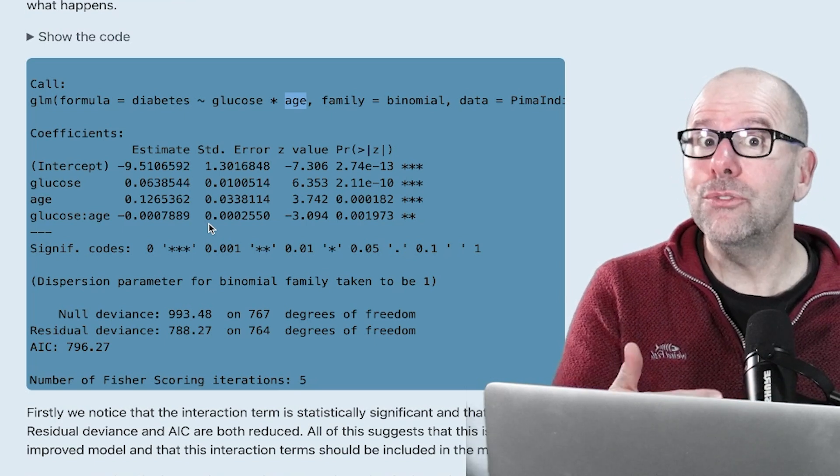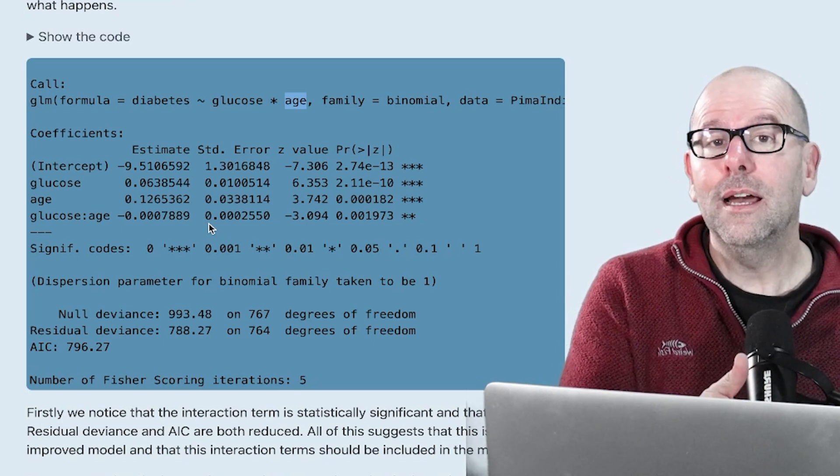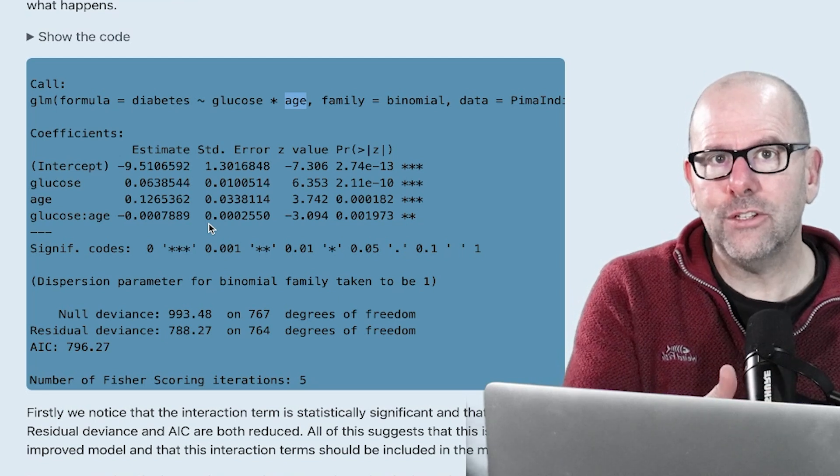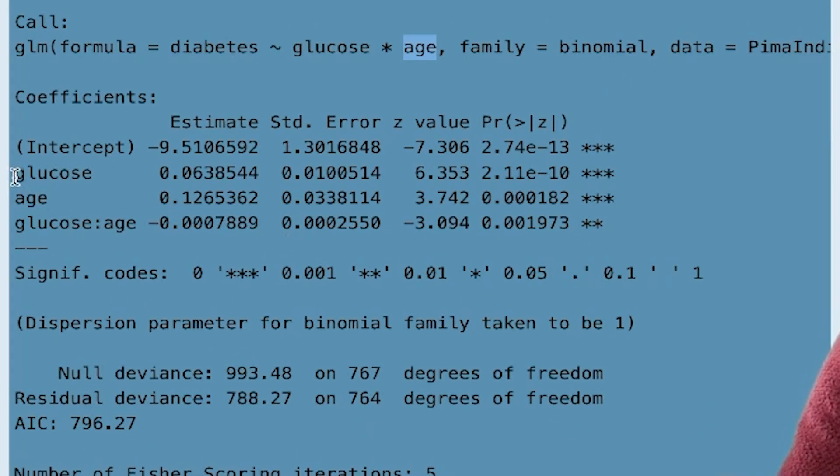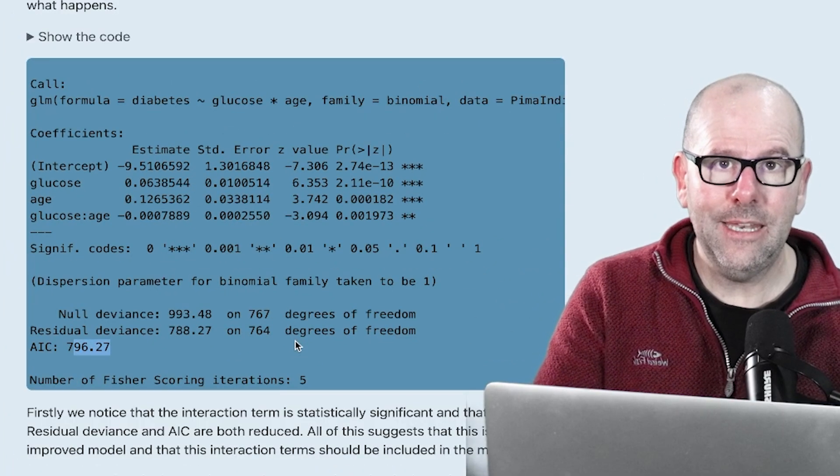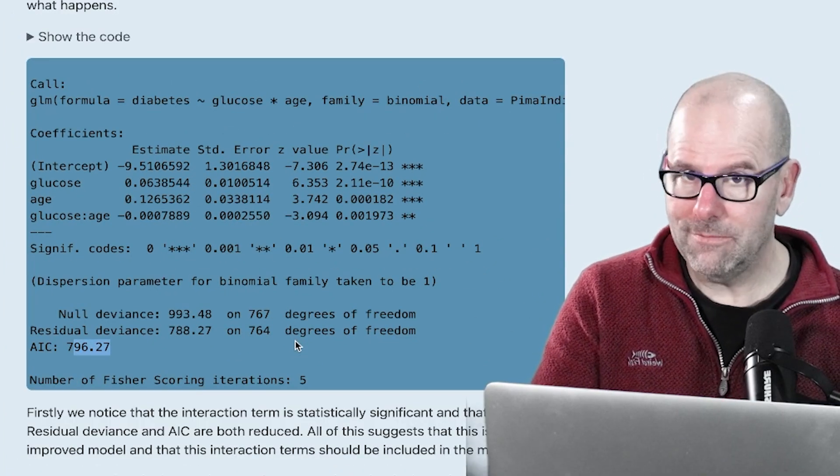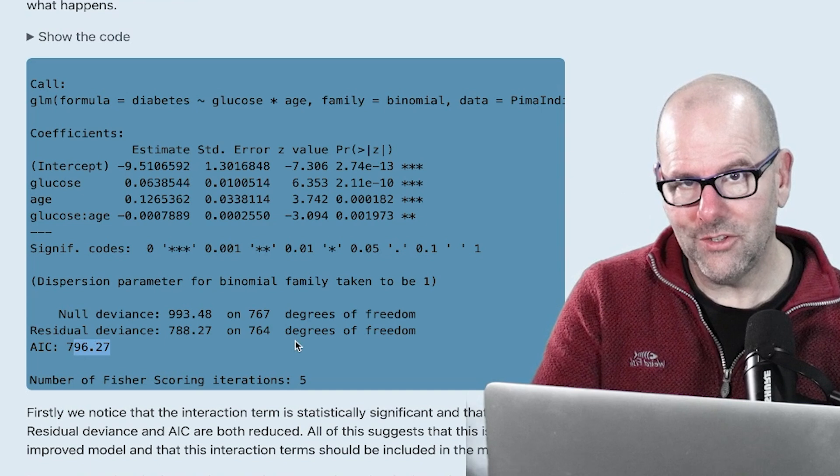And in this case, it's negative. So as you get older, glucose has less of an effect on your risk of diabetes. So that's an effect modifier. So we've got a couple of things here. We've got adding in a variable and adding in an interaction term. And as we added in that interaction term, again, statistically significant, again, the residual deviance and the AIC went down. So happy to keep that in the model for now. Notice I said for now, because that might change as we go along.